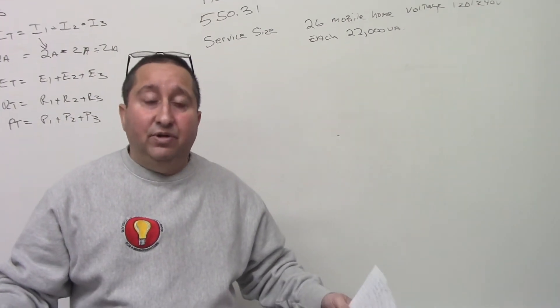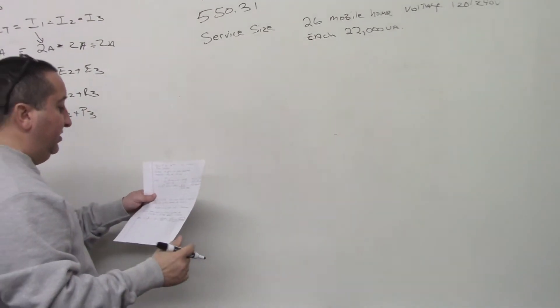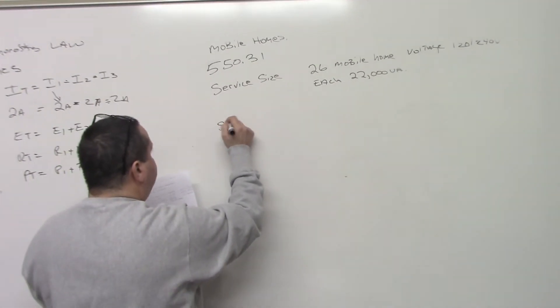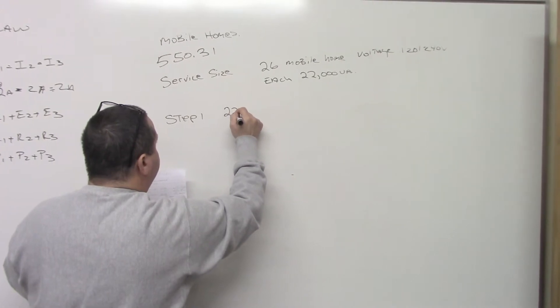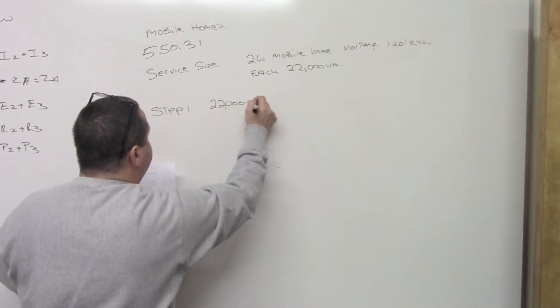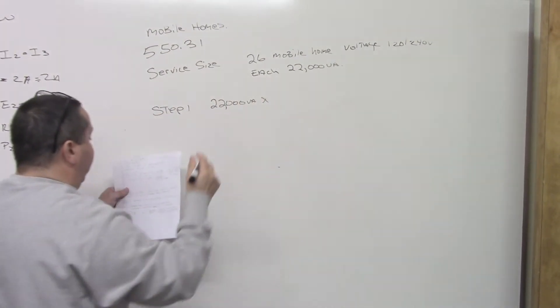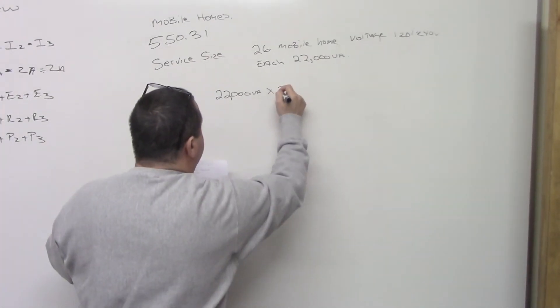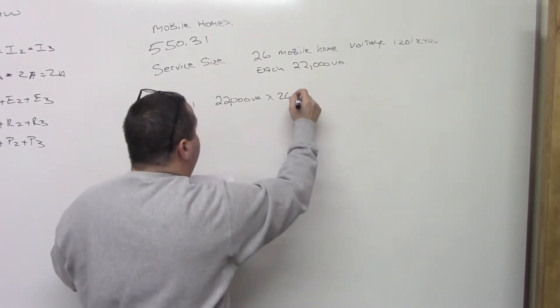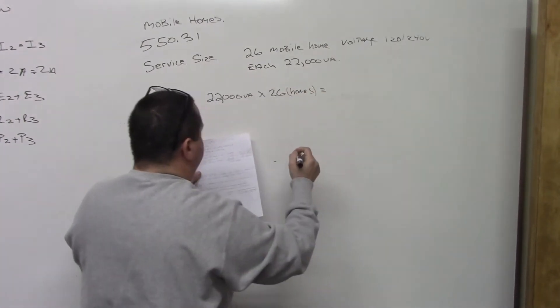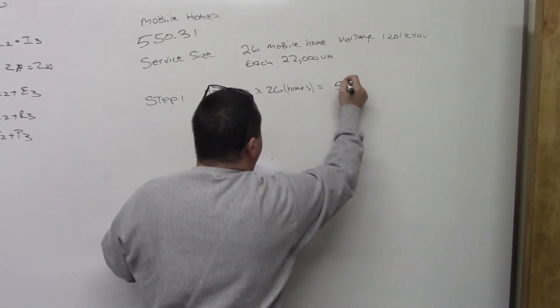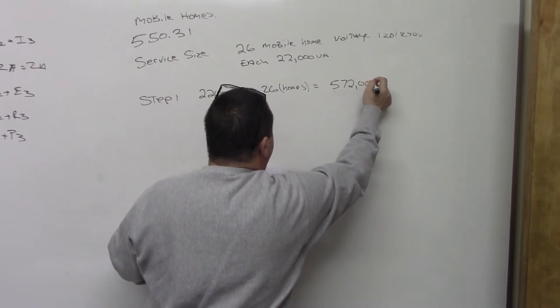So step one, what we're going to do is we're going to go 22,000 volt amps times how many mobile homes? 26. Which equals 572,000 volt amps.